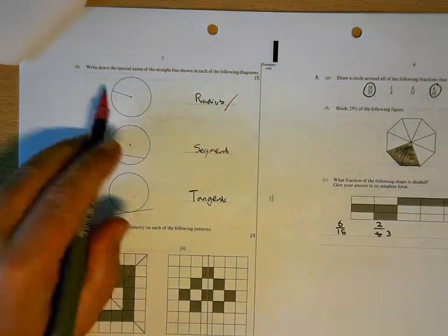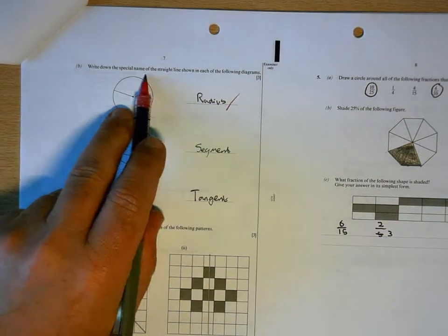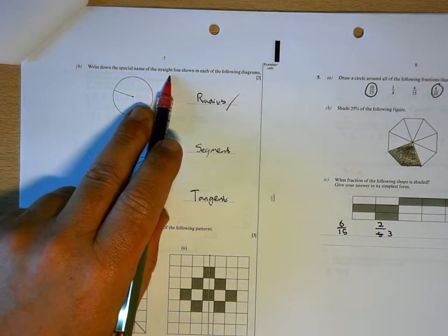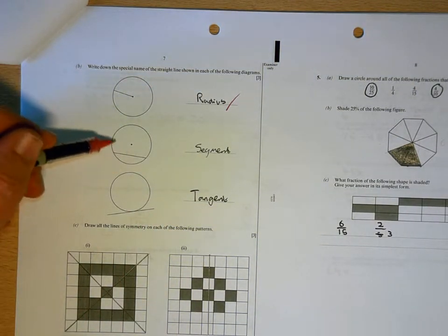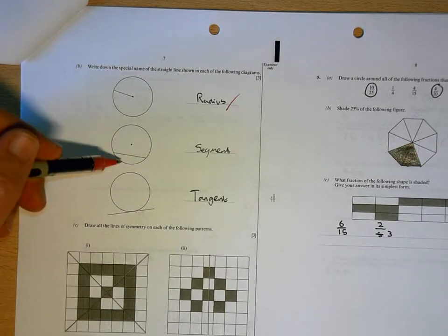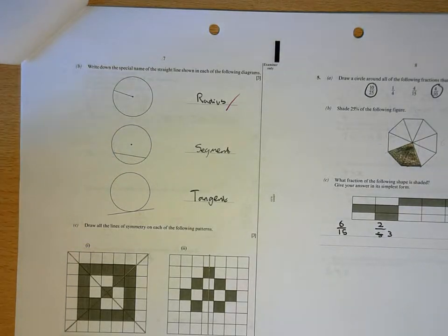Radius. Now, they're asking for the name of the line. The segment is the area. Those are two segments. The line is a chord.